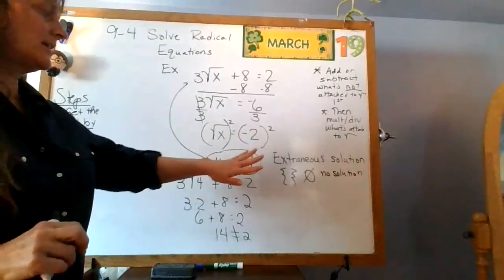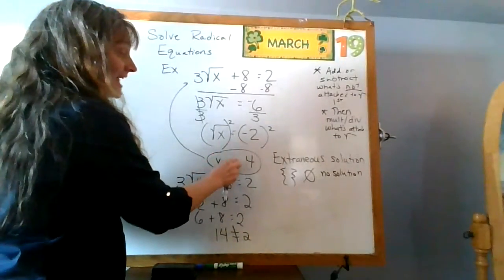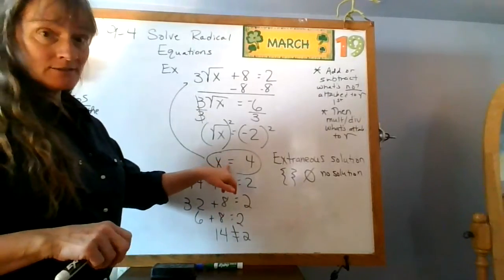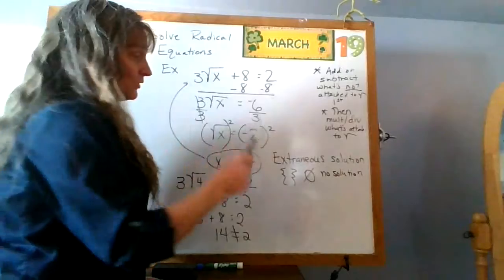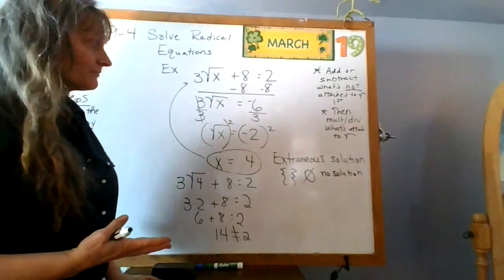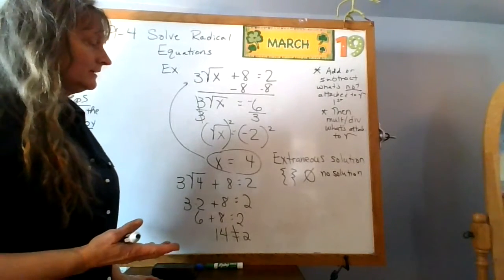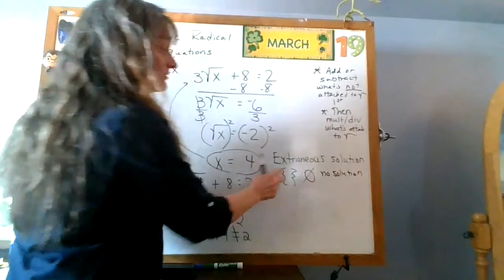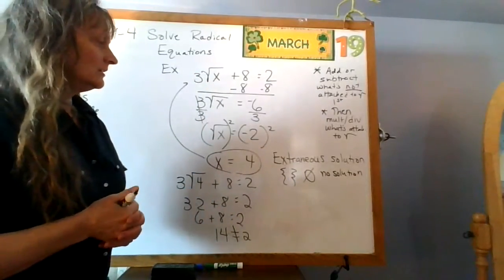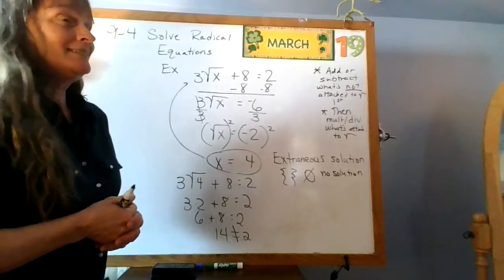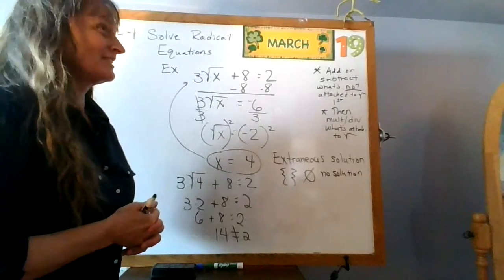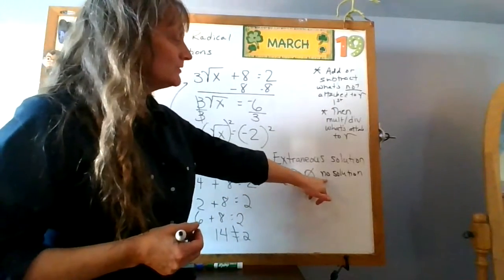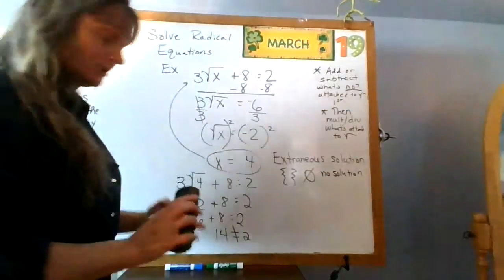If it doesn't work, you can write 'extraneous solution,' 'empty set,' 'null set,' or 'no solution' — all four mean the same thing. When you're doing the homework, you still have to write x equals four, because that's the solution you found — it just happens to be extraneous. Next to it, write one of those four options. My whiteboard marker broke, so I'm working around it, but either 'no solution' or 'empty set' will work fine.